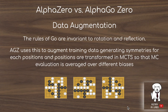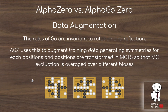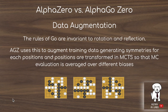The next difference is that while the rules of Go are invariant to rotations — so a board rotated 90 or 180 degrees has equivalent value estimates — AlphaGoZero exploits this to augment training data by generating symmetries for each position. This makes the Monte Carlo evaluation more robust by averaging over different board configurations. In chess, however, you don't have this symmetry. You can't just rotate or reflect the board because of rules like castling, so data augmentation of this kind isn't applicable.